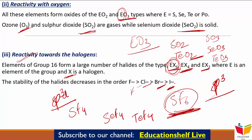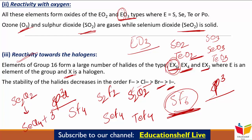Now the well-known monohalides are dimeric in nature, जैसे S₂F₂, S₂Cl₂, Se₂Cl₂ और Se₂Br₂। ये dimeric halides disproportionation reaction दिखाती हैं। जैसे suppose करो हमने Se₂Cl₂ लिया, तो ये disproportionate होके हमें SeCl₄ + 3Se देती है।